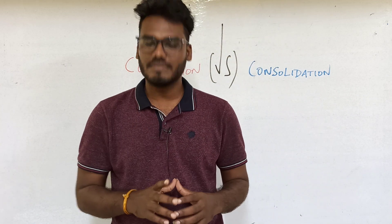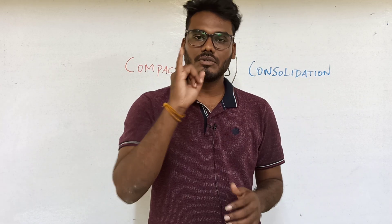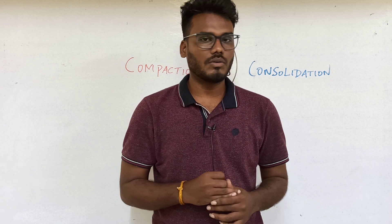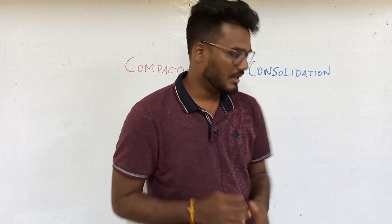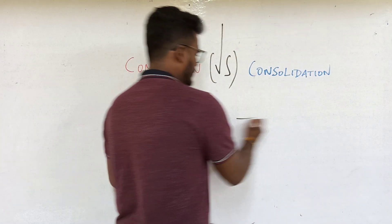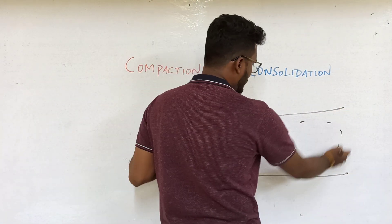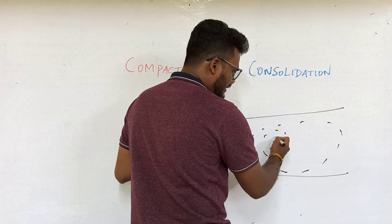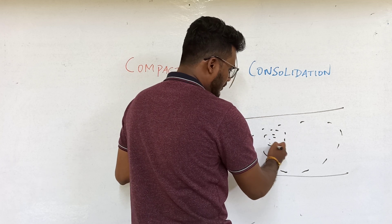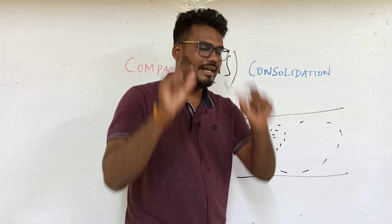Now coming to consolidation. In compaction, air is removed. In consolidation, pore water is removed. Consider clayey soil. Clayey soil has voids, and those voids are filled with pore water. So pore water is present within the clayey soil.